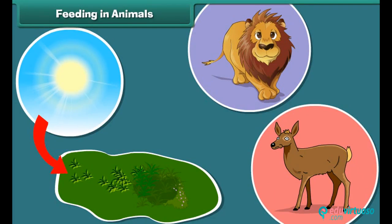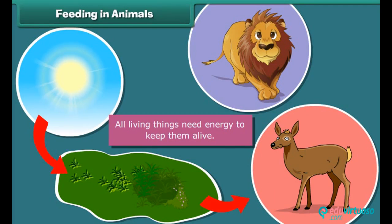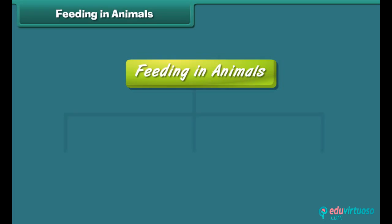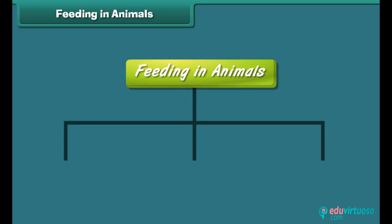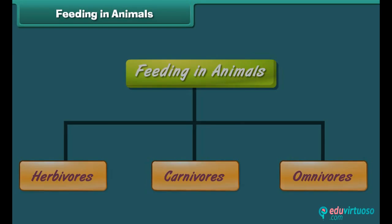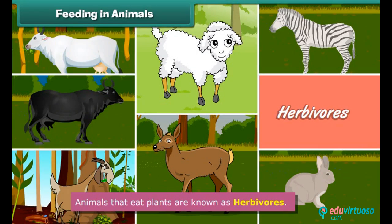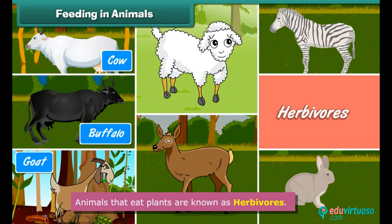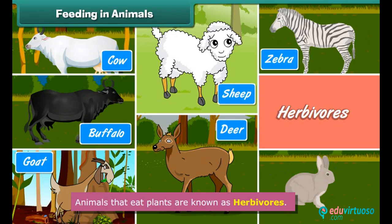Feeding in animals: All living things need energy to keep them alive, and they get this energy from food. On the basis of type of food, animals are of three types: herbivorous, carnivorous, and omnivorous. Animals that eat plants are known as herbivorous. Examples include cow, buffalo, goat, sheep, deer, zebra, and rabbits.